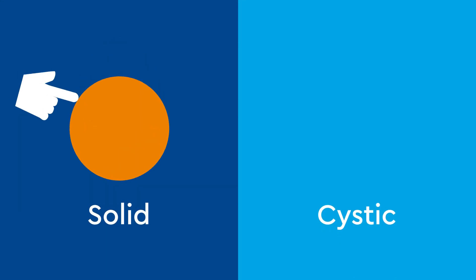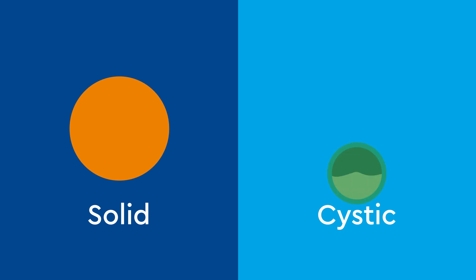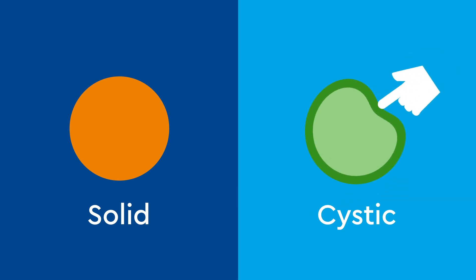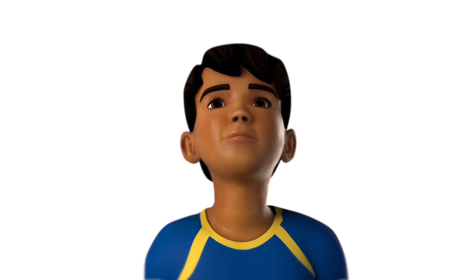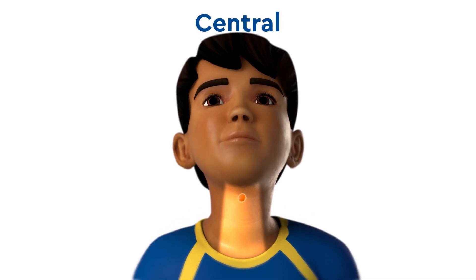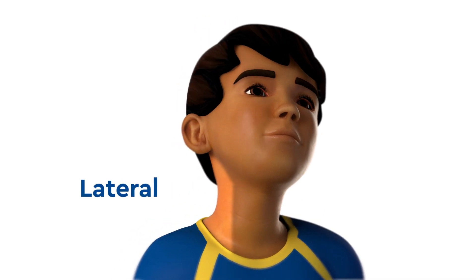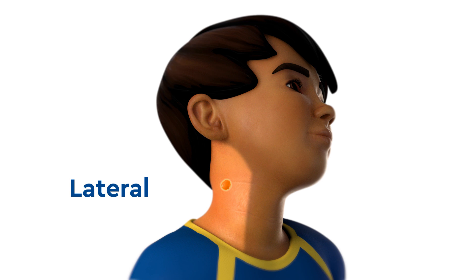A solid mass is a dense lump of tissue, while a cystic mass is a sac that fills with fluid. Neck masses can be central, on the front of the neck, or lateral, on the left or right side of the neck.